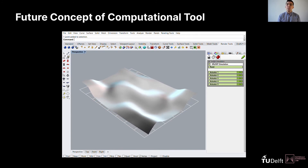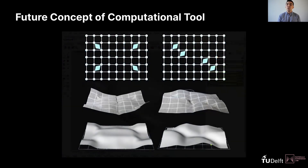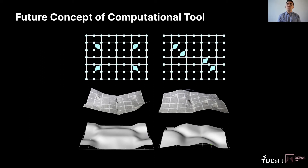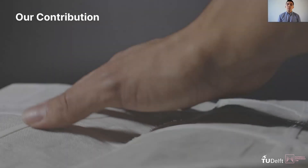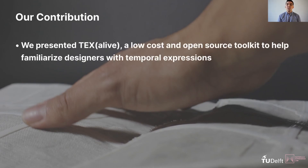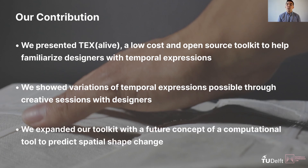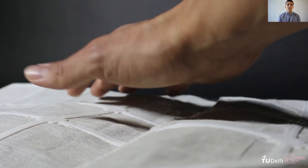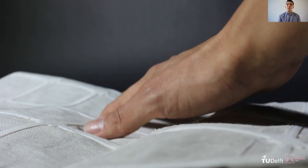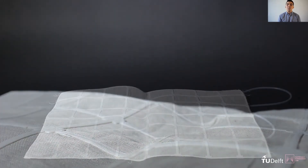Here we showcase an initial prototype built on Grasshopper of our future concept for a computational tool to predict spatial shape change. With our augmented toolkit, we aim to further inspire HCI and design scholars towards hybrid toolkits in which the digital twin of the hardware supports the understanding of temporality in real time with physical and digital manipulation. In conclusion, our work presents Textilife, a low-cost and open-source physical-digital toolkit that helps familiarize designers with the complexity and expressivity of temporal forms in shape-changing textile interfaces. We showed variations of temporal expressions from a creative session with designers, and expanded our toolkit with a future computational concept. With Textilife, we hope to facilitate the exploration of temporal expressions to open up a design space for unforeseen future application scenarios and lifelike expressions in material-driven design.